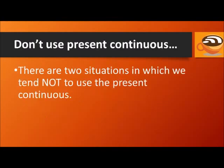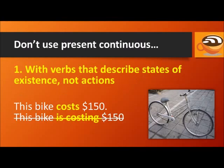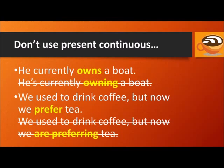There are two situations in which we tend not to use the present continuous. One is with verbs that describe states of existence, not actions. For example: This bike costs a hundred and fifty dollars — don't say "This bike is costing a hundred and fifty dollars." He currently owns a boat — don't say "He's currently owning a boat."